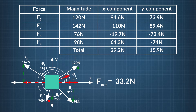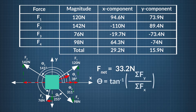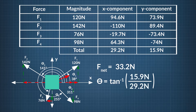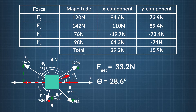To find the angle at which the net force is being exerted, we take the tan inverse of all the forces acting in the y direction divided by the sum of the forces acting in the x direction. The angle theta equals the tan inverse of 15.9 newtons divided by 29.2 newtons. Theta equals 28.6 degrees with respect to the positive x axis.